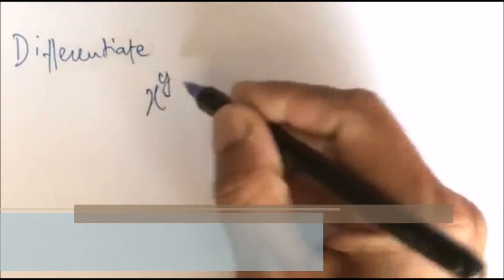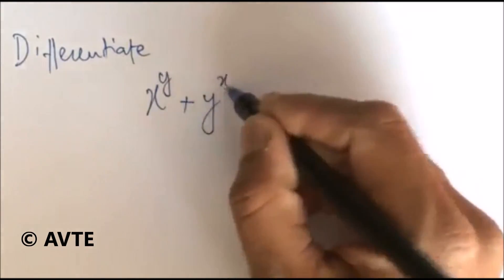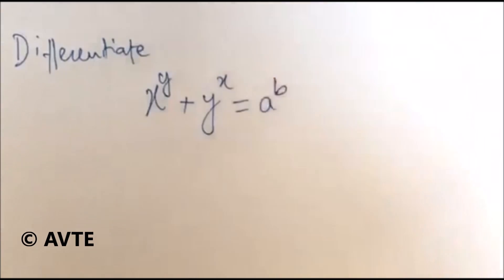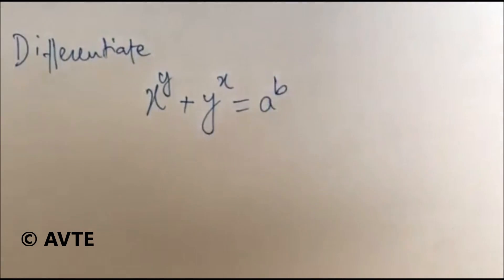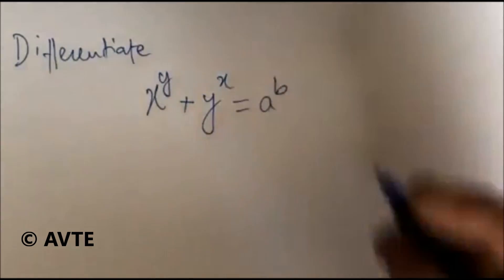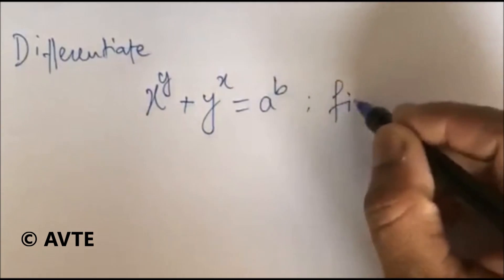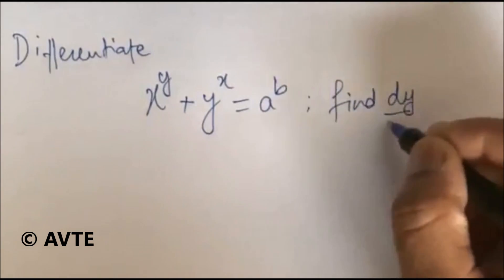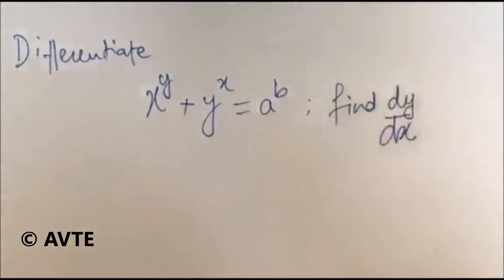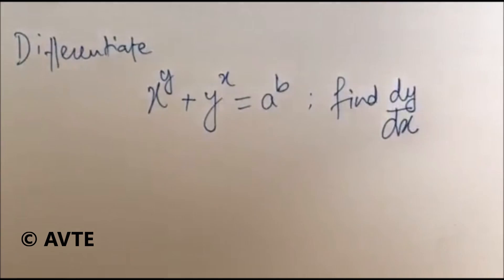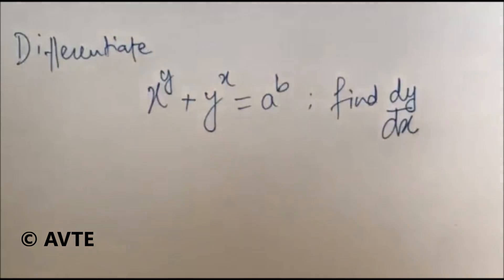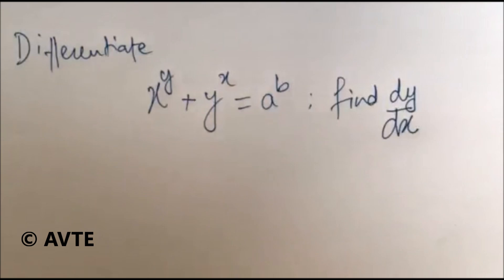Differentiate x to the power y. Now for this question, if they tell you to find dy by dx — because it's a function to the power function — you would take u and v, then take log and solve them separately using implicit differentiation, collect dy by dx, and it will take a lot of time.